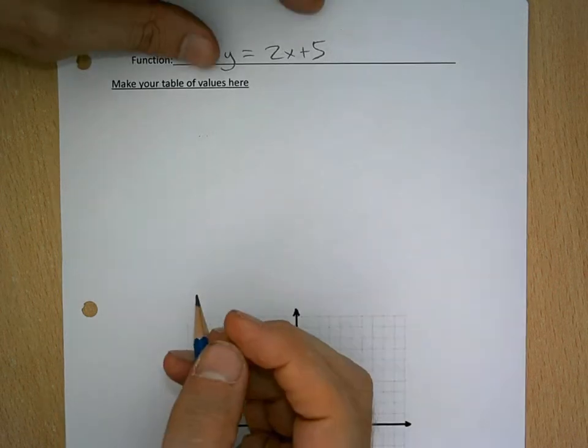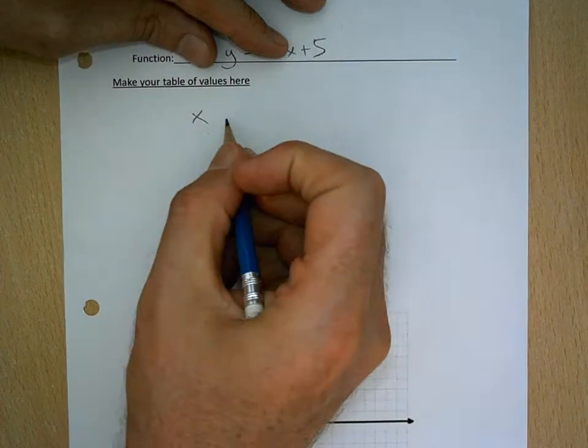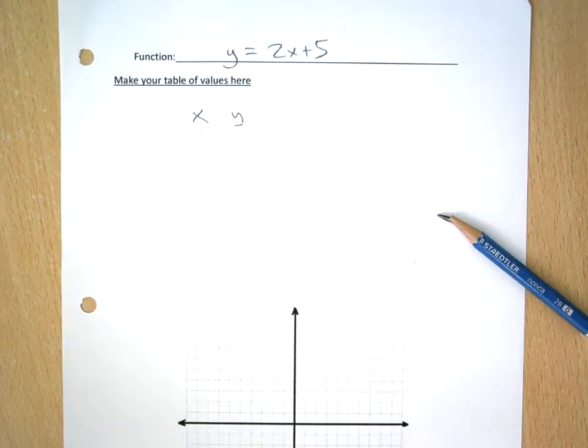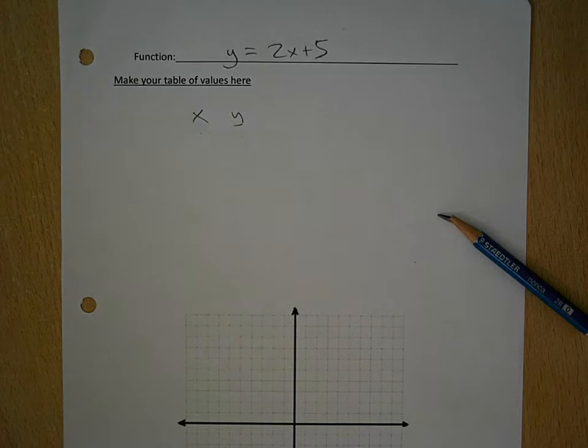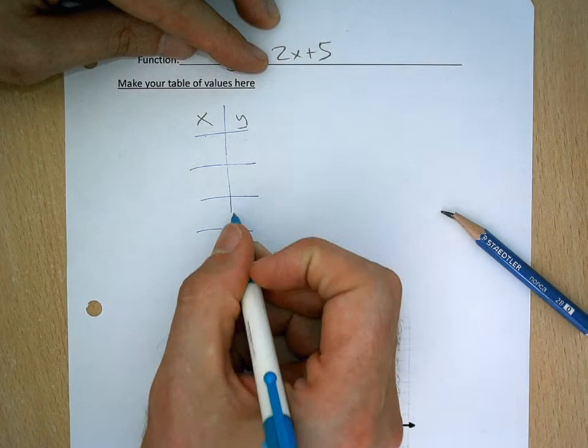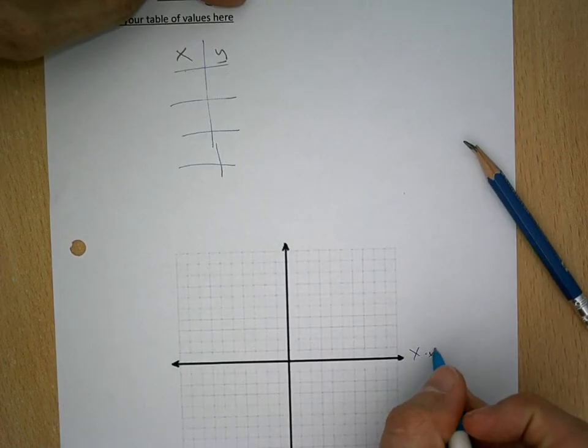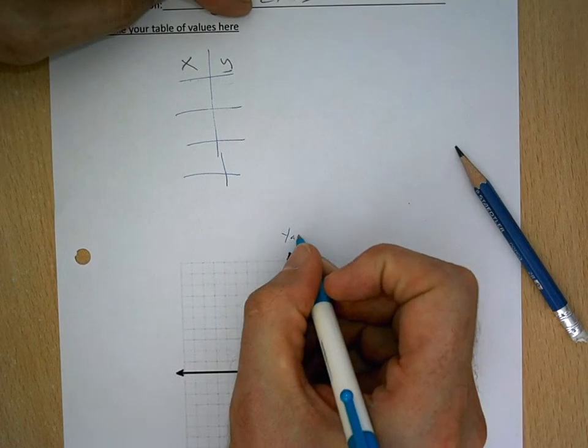The first thing we're going to do is, of this function, we're going to graph a series of ordered pairs. Of course, my pencil breaks right when I'm doing a demonstration. But luckily for me, I have another backup. I'm going to make a table of ordered pairs and I'm going to graph them here on the function. We see here this is the x-axis and this is the y-axis.